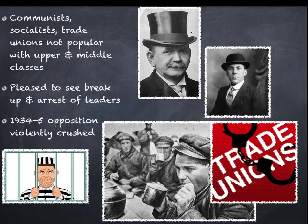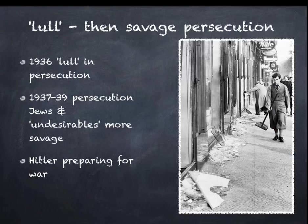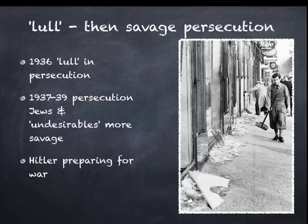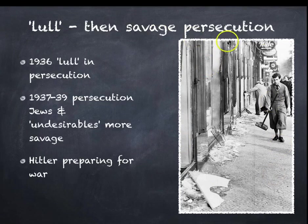Concentration camps such as Dachau were opened. There was something of a lull in persecution in 1936, because the Berlin Olympics were being staged and the Nazis wanted to present an acceptable face to the outside world and to foreign journalists. Between 1937 and 1939, persecution of Jews and other groups designated as undesirables was much more savage. You can see a picture here of Kristallnacht, in which Nazi stormtroopers, with the encouragement of Goebbels, smashed up Jewish shops, businesses and burned down synagogues.